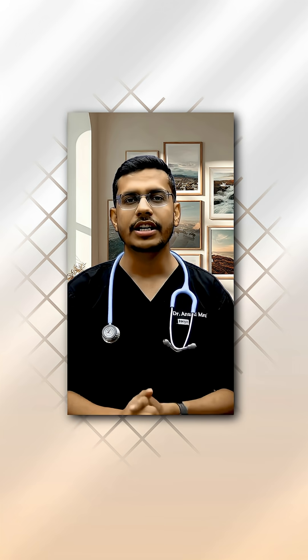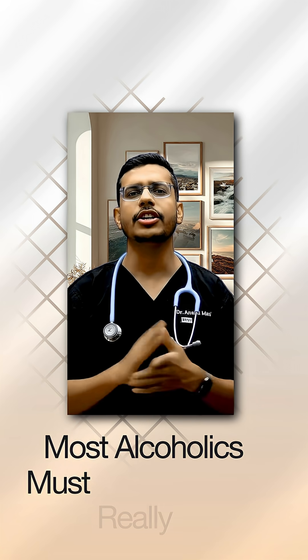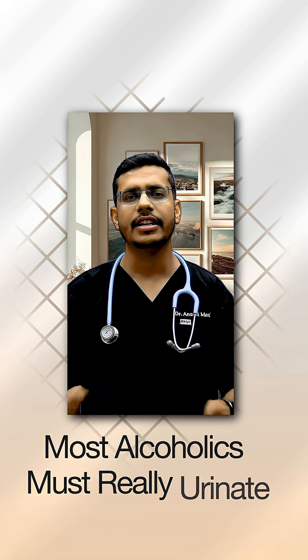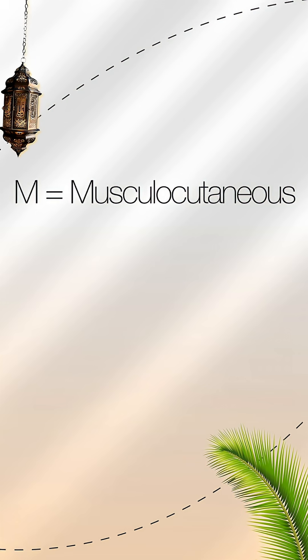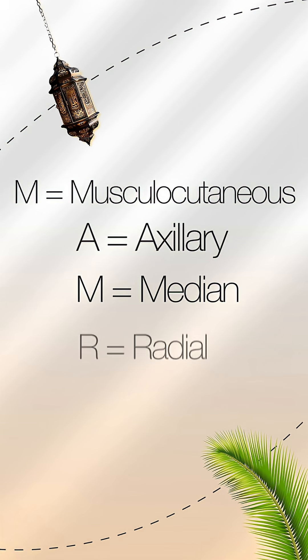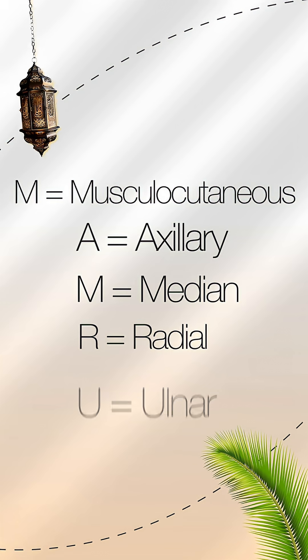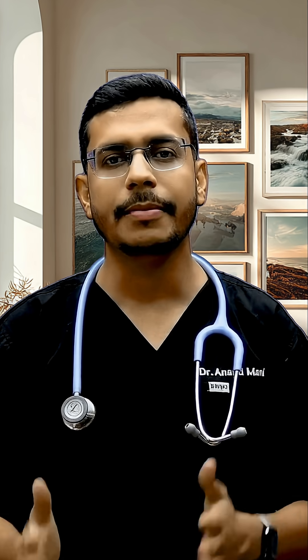And finally, the famous 5. Mnemonic 2: 'Most Alcoholics Must Really Urinate.' M for musculocutaneous, A for axillary, M for median, R for radial, U for ulnar. That's your brachial plexus — decoded, demystified, and ready for viva victory.